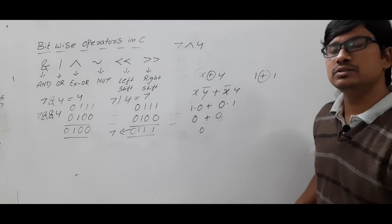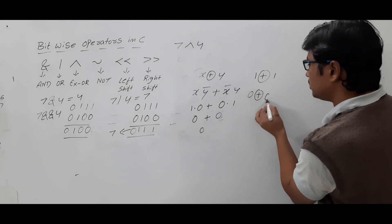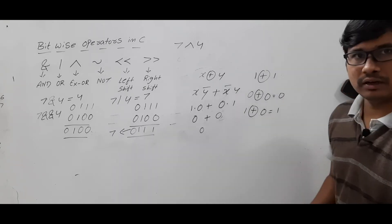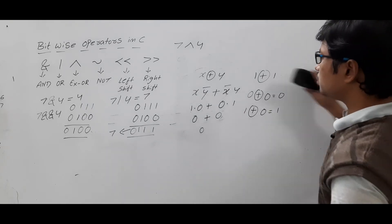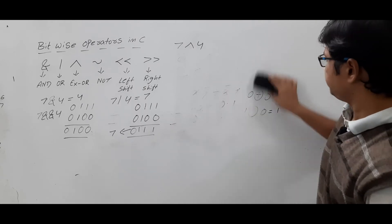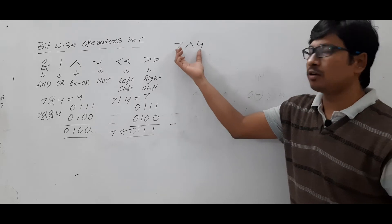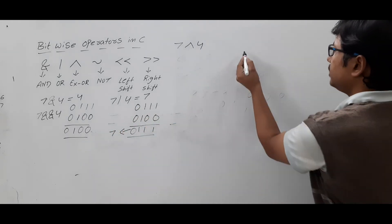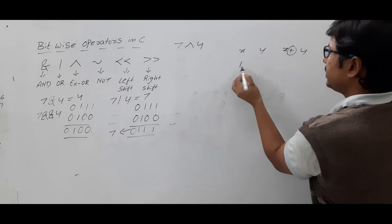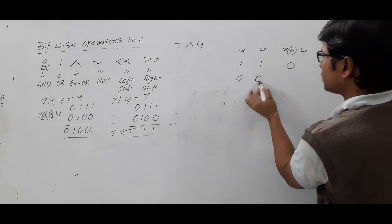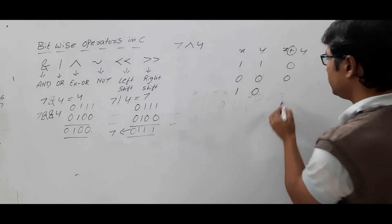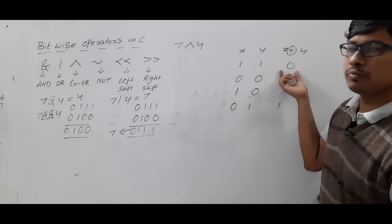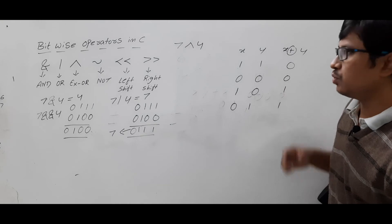I request you to try 0 XOR 0 and 1 XOR 0 — you will get 0 and 1 respectively. The truth table of exclusive OR: if both inputs are the same (both 1 or both 0), the output is 0. If both inputs are different (one 0 and one 1), the output is 1. Many people remember it as: same inputs give 0, different inputs give 1.